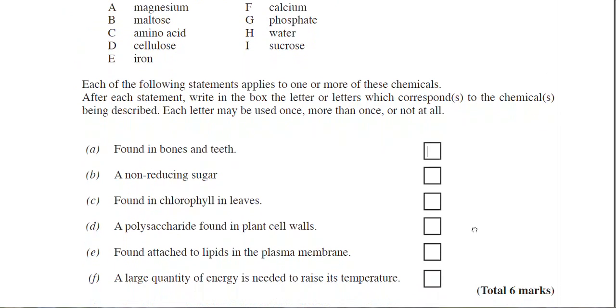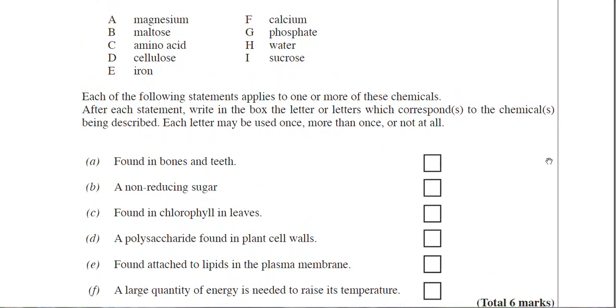The first one there is asking you about bones and teeth. So which of the chemicals above actually are found in bones and teeth? You can have a couple of options there. Calcium or indeed phosphate is actually found in bones and teeth. So I'm just going to put in F there for calcium.